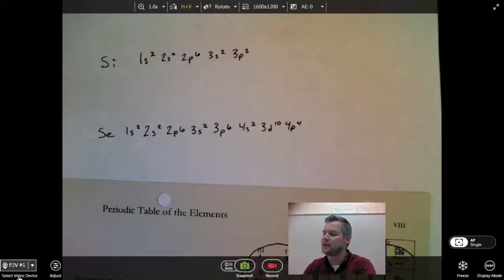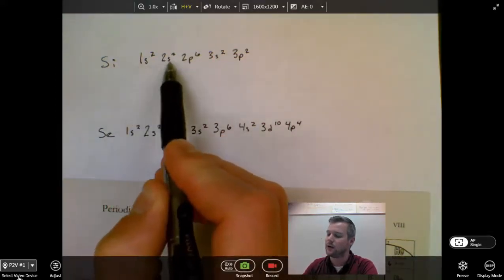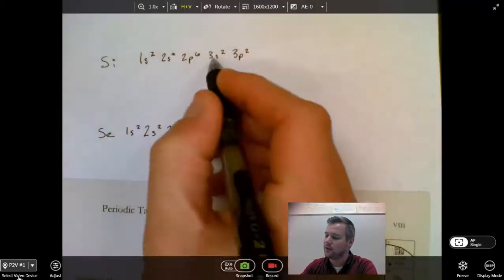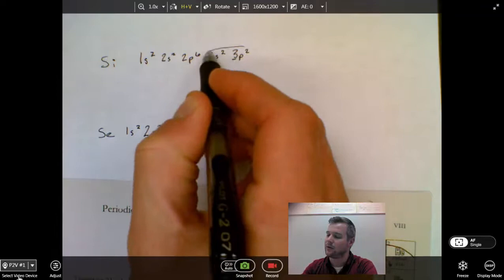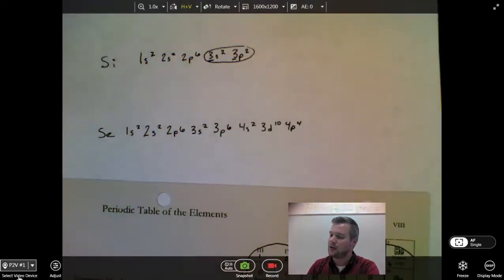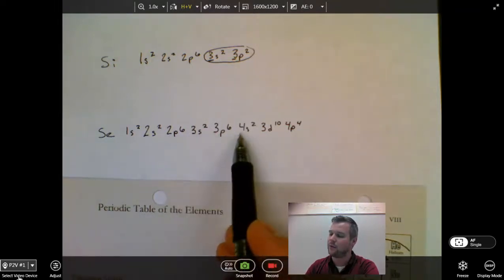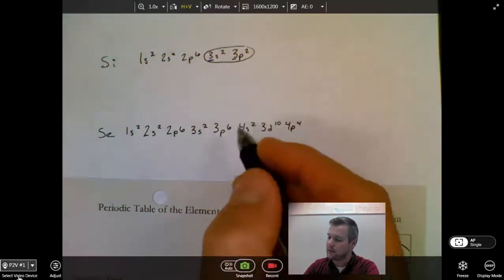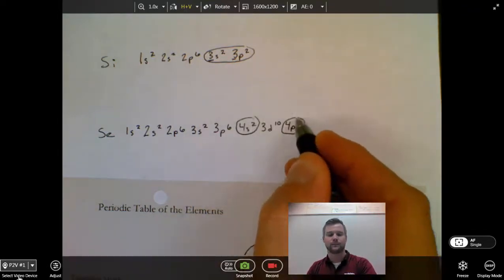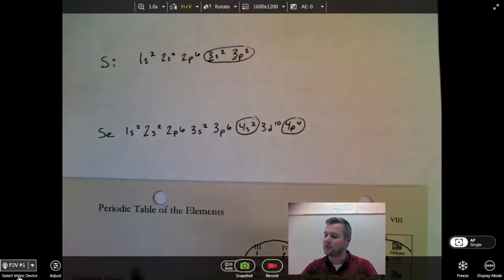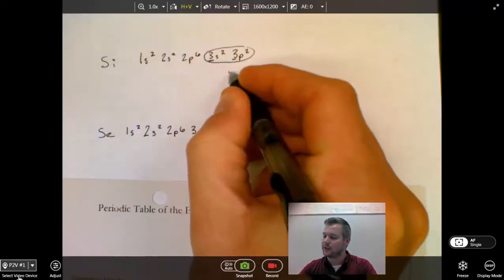Now, valence is going to be the highest energy level. So my energy levels are the numbers in front of letters. 1, 2, 2, 3, 3. So 3 and 3, these are my valence energy levels, and I'm going to normally circle that, circle your valence. For selenium, 1, 2, 2, 3, 3, 4, 3, 4. So my 4s are my highest number. Notice how we're going to skip 3 because it's a smaller number than 4.